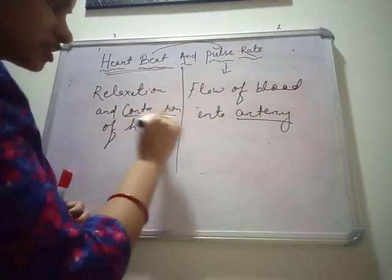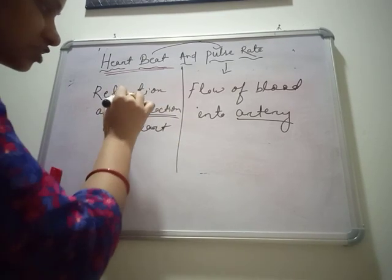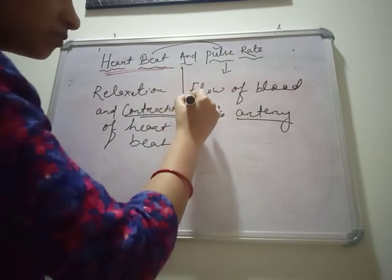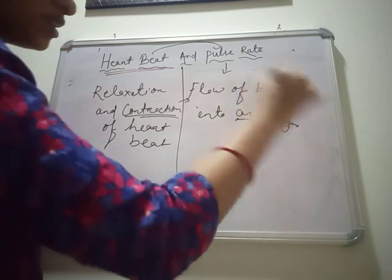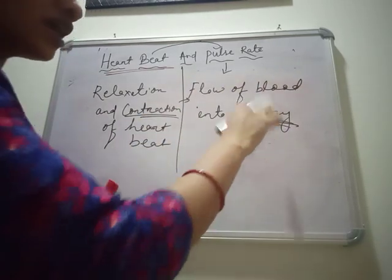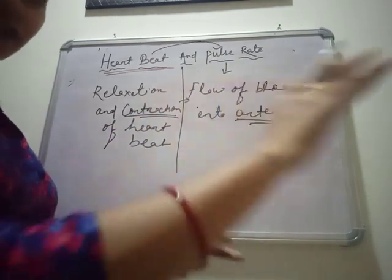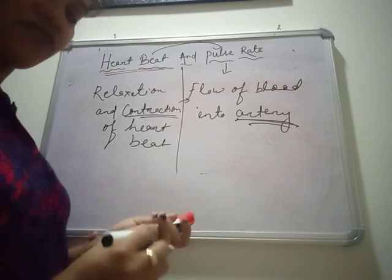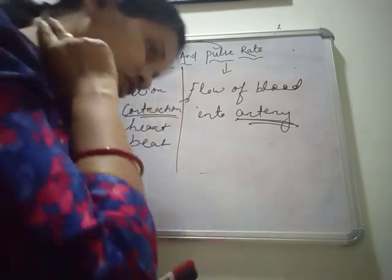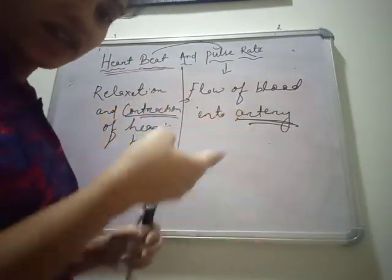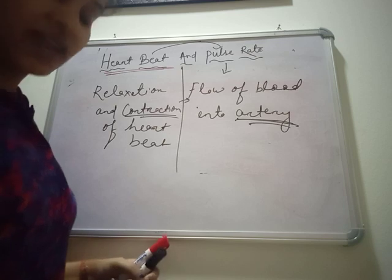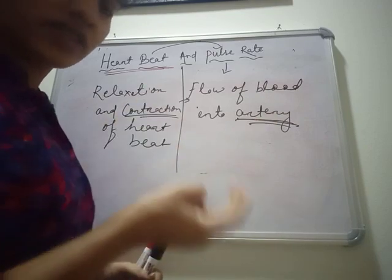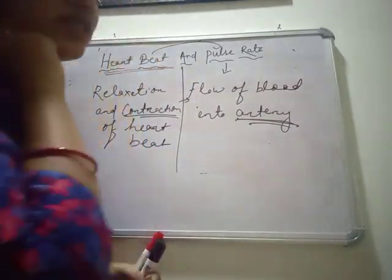Pulse rate happens when there is contraction. Both relaxation and contraction make the heart rate. But only due to contraction, the blood flows through the artery and the throbbing sound is produced — that is your pulse rate found in the artery. Arteries are all around your body. You can also feel your pulse rate at the side of your neck, at the back of your knee, or at the side of your ankle — just as you feel it at the wrist.